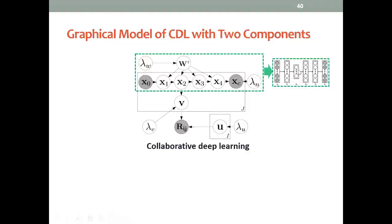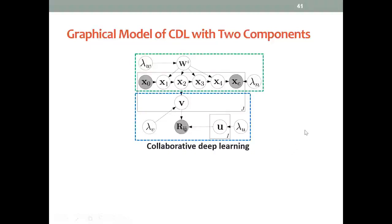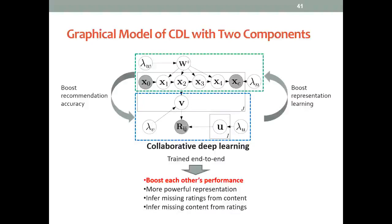The internal is just a simple probabilistic deep learning model with some linear non-linear structure. We have this group part as the graphical component to handle the relations between users, items, and ratings. These two parts actually train end-to-end and boost each other's performance.